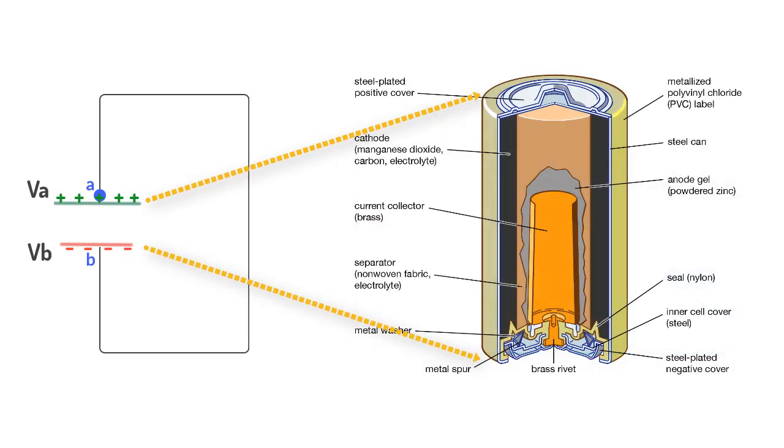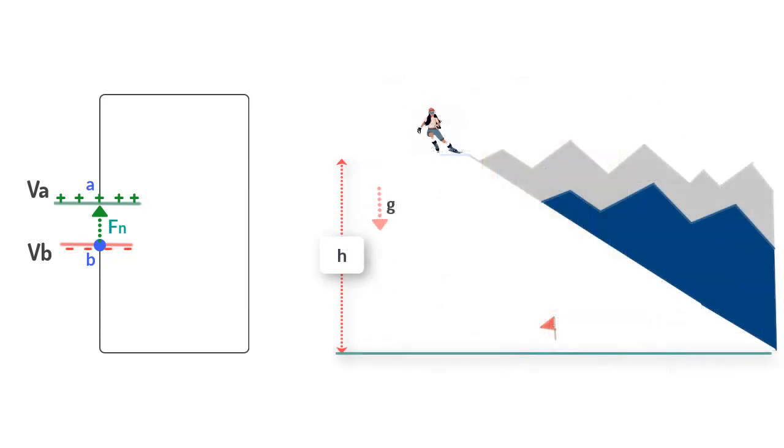So let us go ahead and denote this force as Fn. So you see this force Fn is carrying the positive charge from here to here, thus creating a positive potential here and a negative here. In a way, the force is helping maintain the potential difference VA minus VB that would have otherwise become zero.